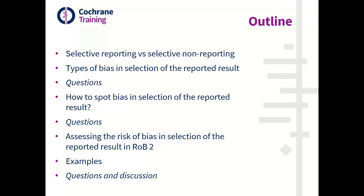In this session, I'm going to start off by drawing a distinction between selective reporting of results versus selective non-reporting. Then I'll go through some different types of bias in selection of the reported results that you might come across as a review author. We'll take a short break for questions, then I'll move on to explaining in detail how to do some detective work to spot any risk of bias in selection of the reported result, giving tips for those with access to more information as well as those largely restricted to just the journal article.